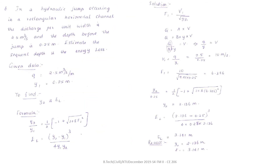The next problem: in a hydraulic jump occurring in a rectangular horizontal channel, the discharge per unit width is 2.5 m³ per second per meter and the depth before the jump is 0.25 m. Estimate the sequent depth and the energy losses. The notation for discharge per unit width is small q, where q = Q/b.